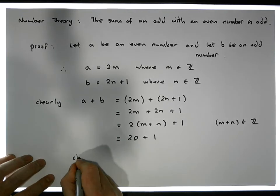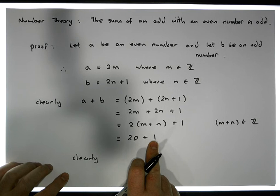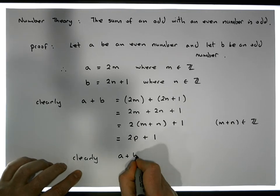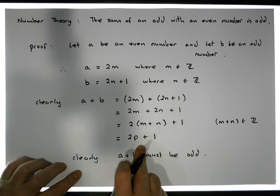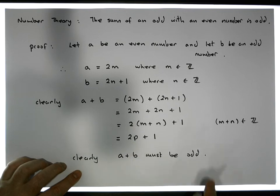So clearly, well clearly we have this, is that two doesn't divide this number here. So clearly what we have is that A plus B must be odd, because what we've ended up when we added the even with the odd, we ended up with an odd number.